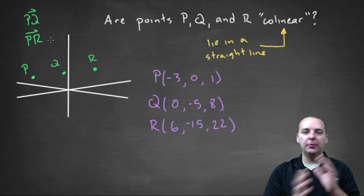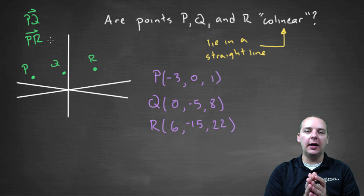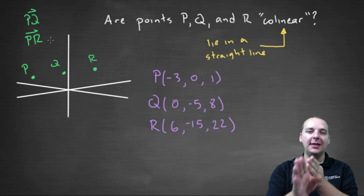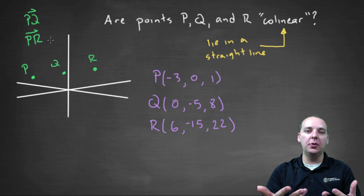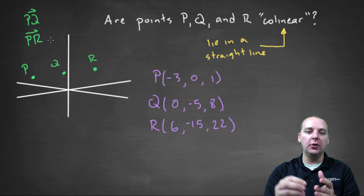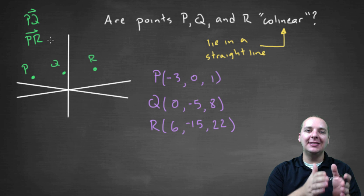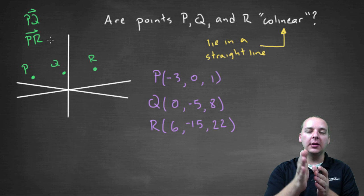You could build QR or other vectors as well, but think about it: if these points really are in a straight line, then vectors PQ and PR would have to go in the same direction. If they're going in the same direction, the only difference would be their magnitude. So we're going to find PQ and PR, then see if one is a scalar multiple of the other. If it is, then these points must be collinear.